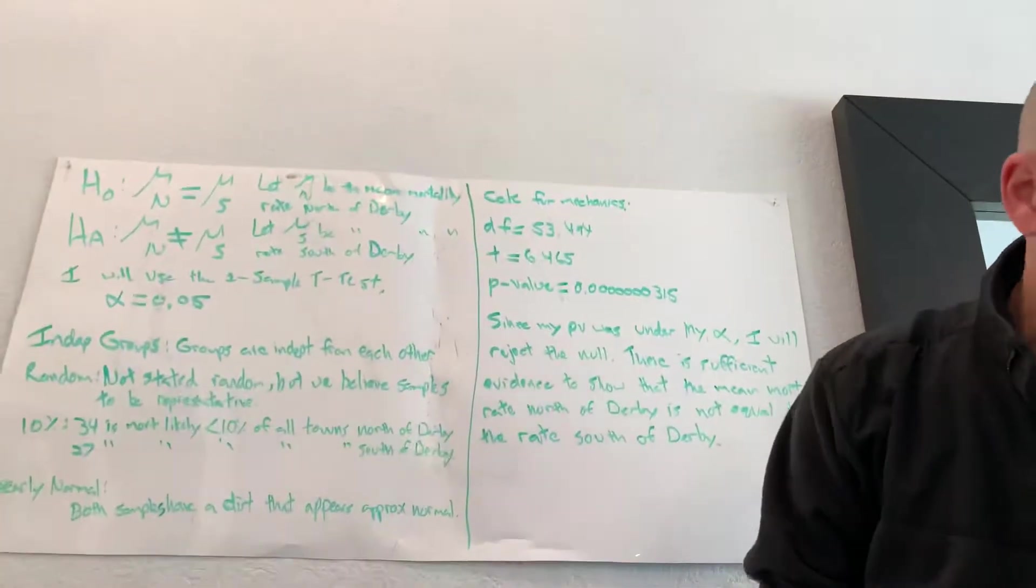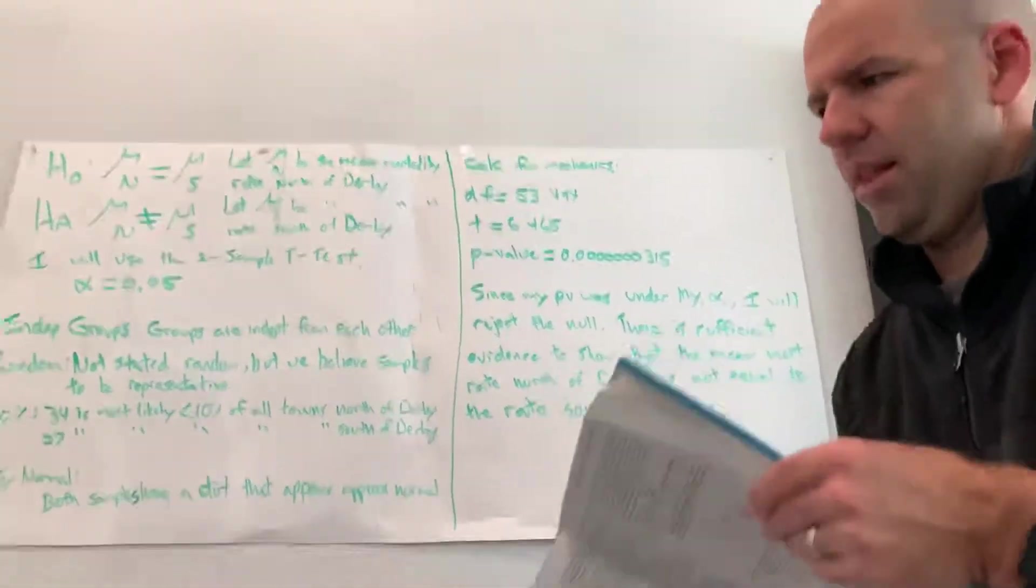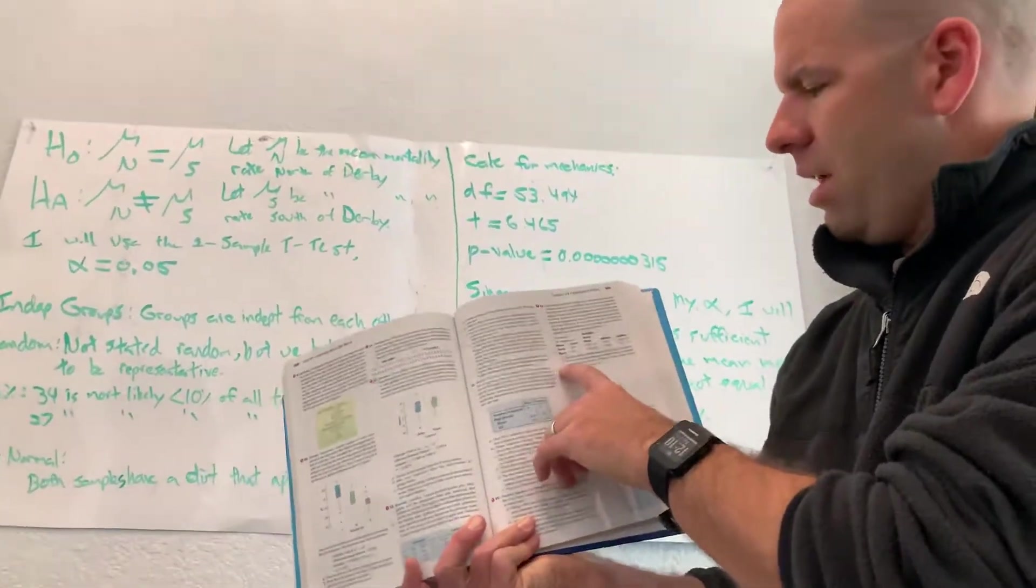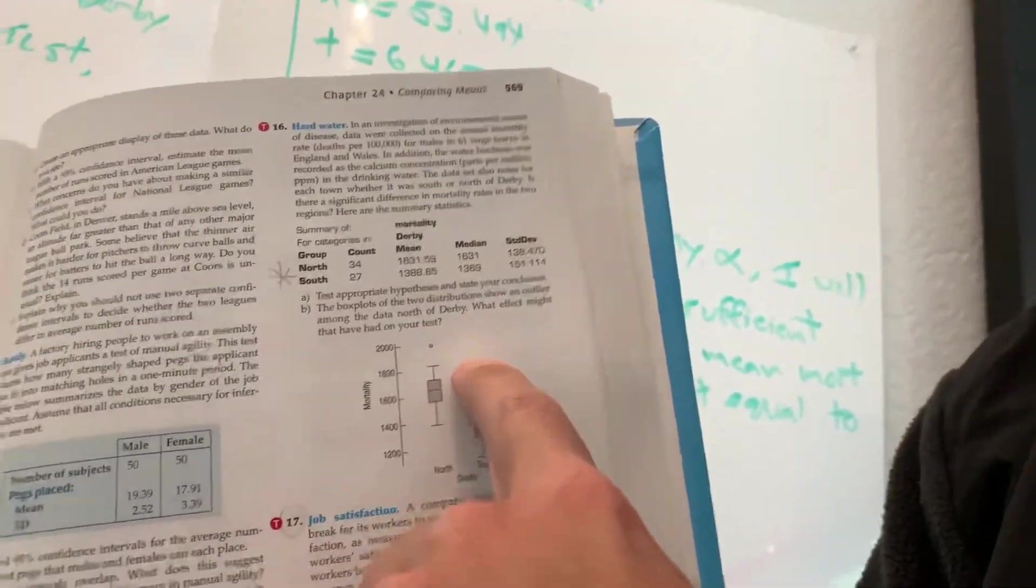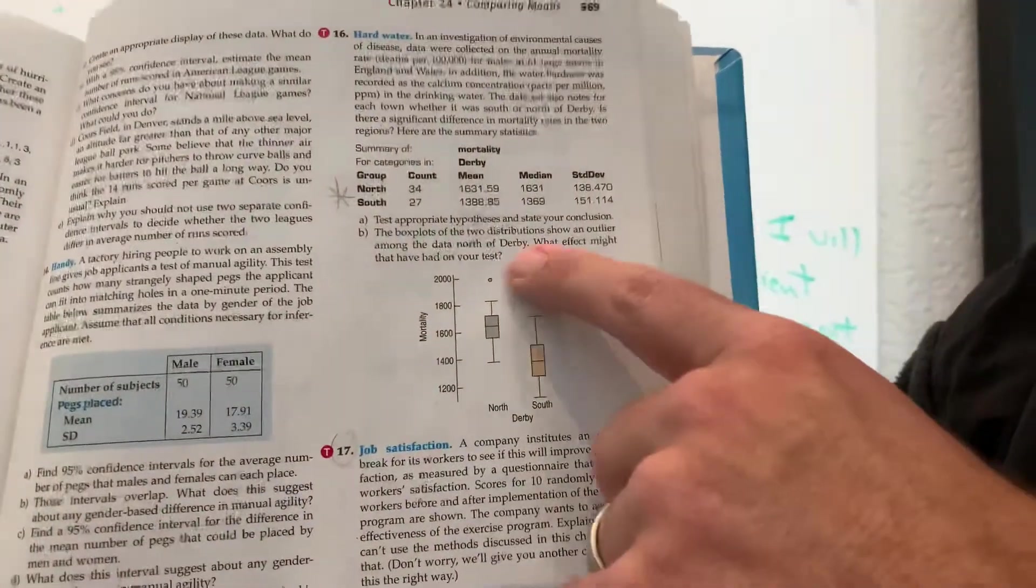And one of the things that they have here is part B, which says 'the box plots of the two distributions show an outlier among the north of Derby. What effects might that have on your test?' So you can see the outlier right there.